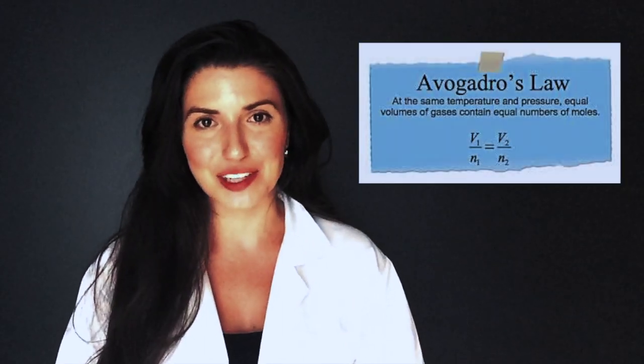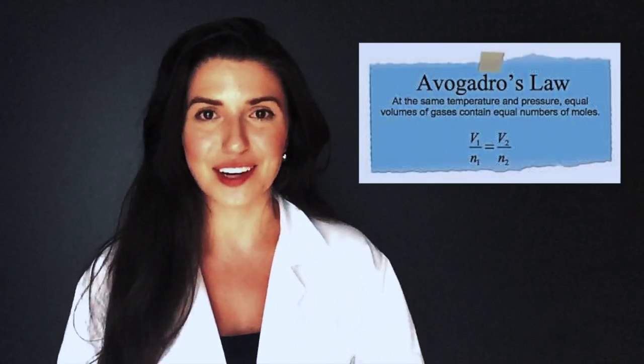Amedeo Avogadro was an Italian scientist. He lived from 1776 to 1856. He's actually most famous for his work on gases. He was one of the first people to figure out the relationship between volume, pressure, and temperature when it comes to gases. He actually has a gas law named after him called Avogadro's Law, but we won't get into that today — you'll see it in the gas unit.